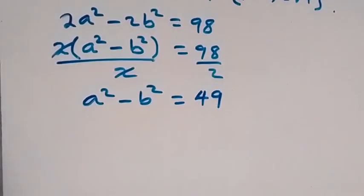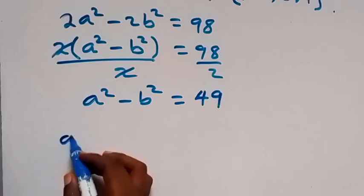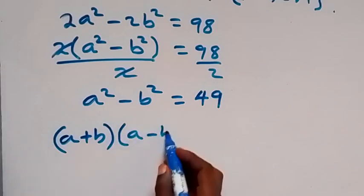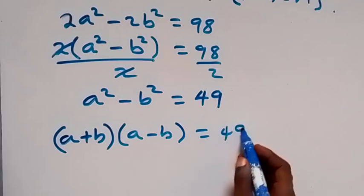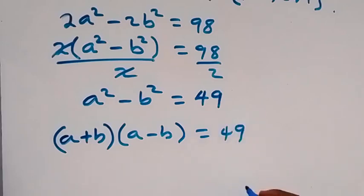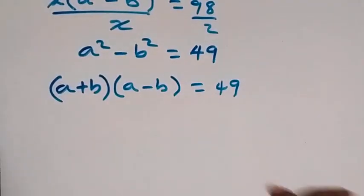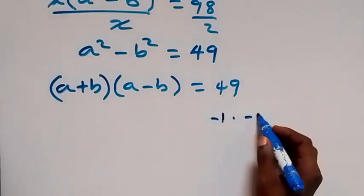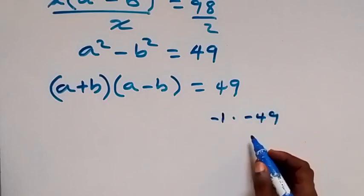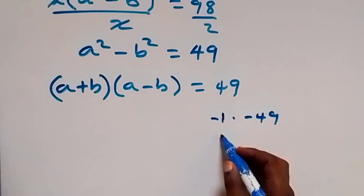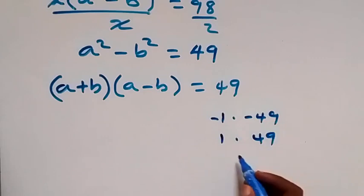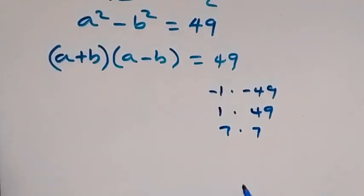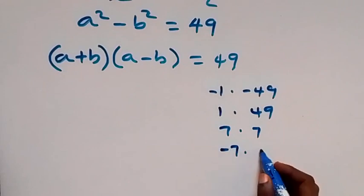We apply the difference of two squares, and this gives us (a + b) multiplied by (a - b) equals 49. When we separate 49, the possible ways of writing 49 are: minus 1 times minus 49, or 1 times 49, or 7 times 7, or minus 7 times minus 7.